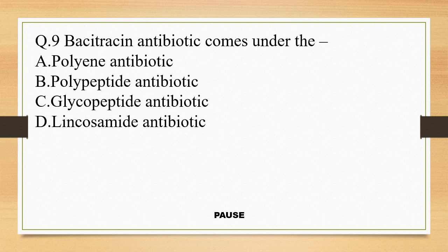Question 9. Bacitracin antibiotic comes under: option A, polyene antibiotic; option B, polypeptide antibiotic; option C, glycopeptide antibiotic; and option D, lincosamide antibiotic. And the right answer is option B, polypeptide antibiotic. So bacitracin antibiotic comes under the polypeptide antibiotic.